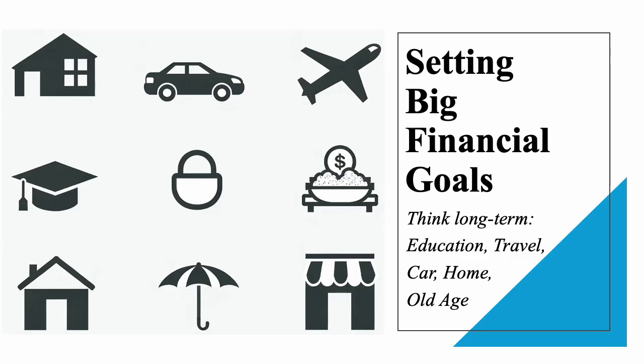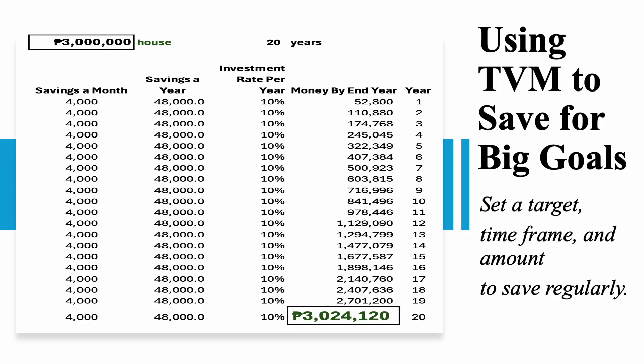Now that we understand the basics, let's talk about setting financial goals. A financial goal could be saving for something big, like a car, a vacation, or further education. By setting clear goals, we can break down the amount we need and figure out how much to save regularly to reach them. Using the time value of money can help us achieve goals more efficiently. Let's say you want to save 3 million pesos for your own house 20 years from now. With the power of compounding, you can calculate how much to save monthly and earn some interest, making it easier to reach that target amount faster.